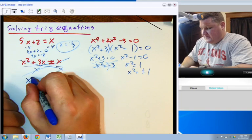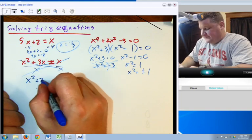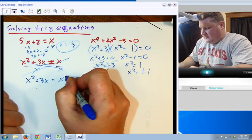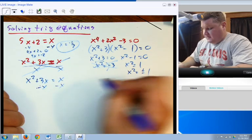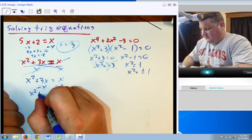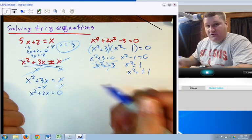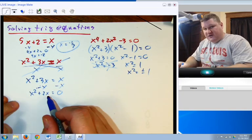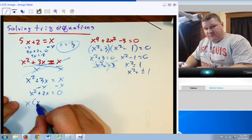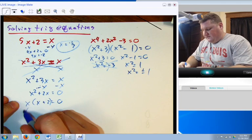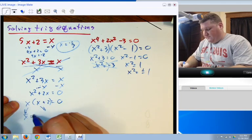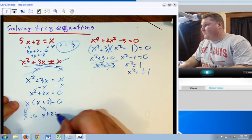Okay. Now, in this case, your best bet is going to be subtract x, subtract x. And in this case, you have x squared plus 2x equals 0. To solve this, you are indeed going to have to factor, bring an x out, and now set each piece equal to 0.